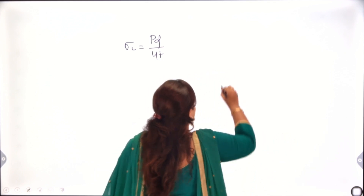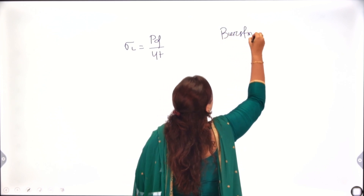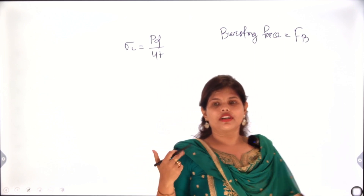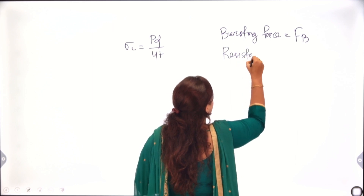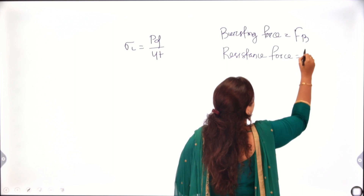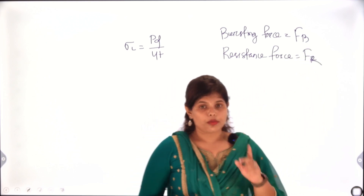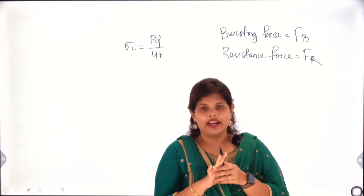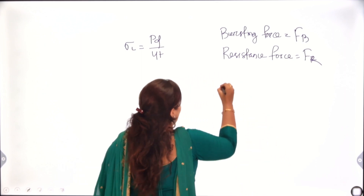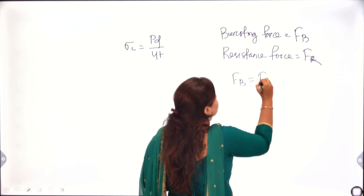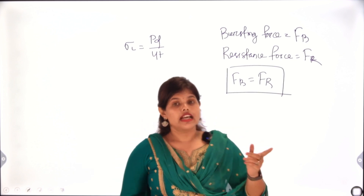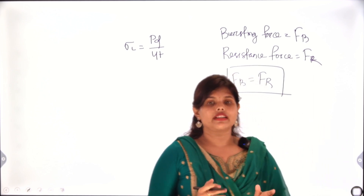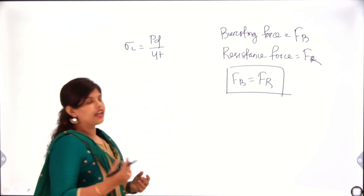Our bursting force is FB. To resist that, we have our resistance force FR. Up to a certain point, FB and FR both fight, and then it is decided who will win. So up to that point, FB equals FR. As per Newton's third law, every action has equal and opposite reaction. So to resist the bursting force, the material generates resistance force. FB is generated by inside pressure.